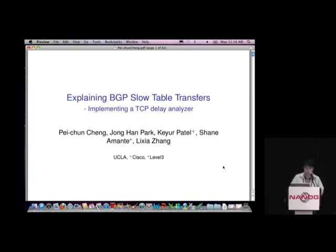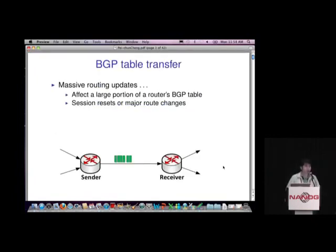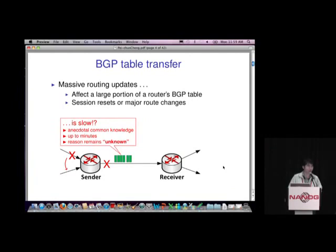This is a joint work with Kira and Chen from Cisco and Level 3. By BGP table transfer, we mean the massive routing update that could affect a large portion of the routing table. This could be triggered by session reset or by some major route change. By design, BGP is a hard-state incremental update protocol, but in practice people observe that these table transfers can be slow — commonly taking even five minutes or up to fifteen minutes.